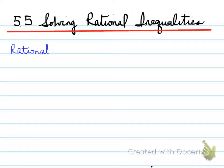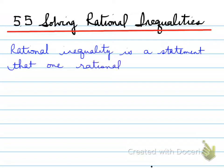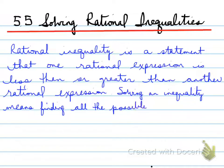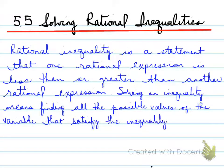5.5, solving rational inequalities. A rational inequality is a statement that one rational expression is less than or greater than another rational expression. So in the previous section we looked at rational equations and now we're looking at rational inequalities. Solving an inequality means finding all the possible values of the variable that satisfy the inequality.